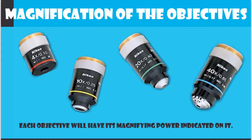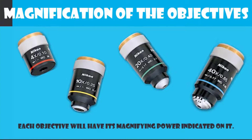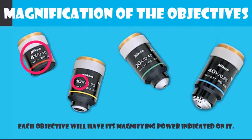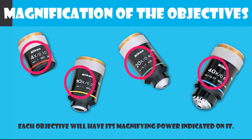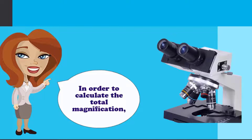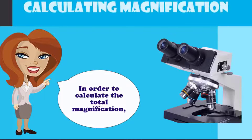To know the magnification of the objective, you will simply need to observe the magnification power that is indicated on it. For example, here is a 4x objective, a 10x, a 20x, and a 40x objective.